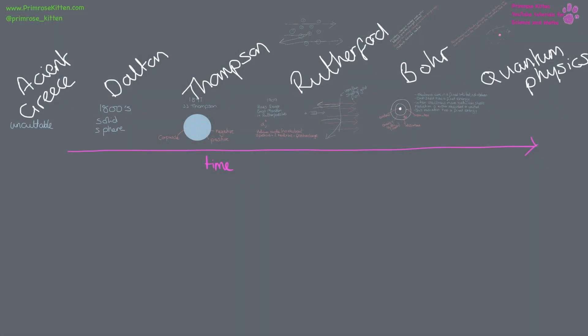The model of the atom has changed quite a lot over time. You don't need to know all the details of this; you need to know that Rutherford was responsible for discovering the nucleus and protons, that Chadwick discovered neutrons, and that Bohr developed our current model.